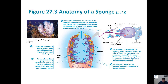The choanocyte brings in food by phagocytosis after particles are inside the body. Another cell type is the amoebocyte, which picks up that food and acts kind of like an amoeba — it crawls around and acts as a kind of circulatory system, moving from one cell to another and delivering food to other parts of the body.